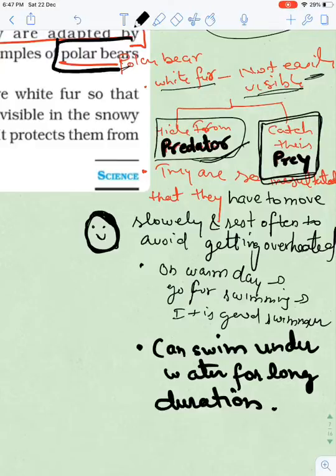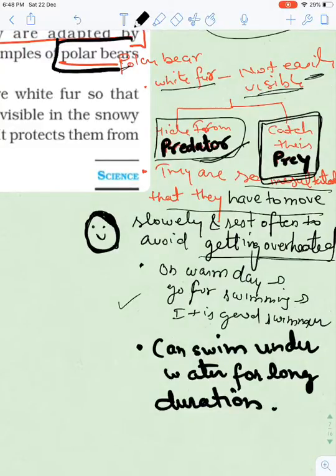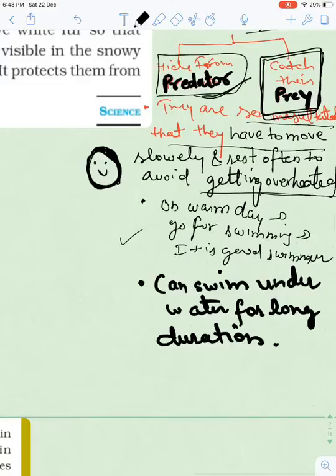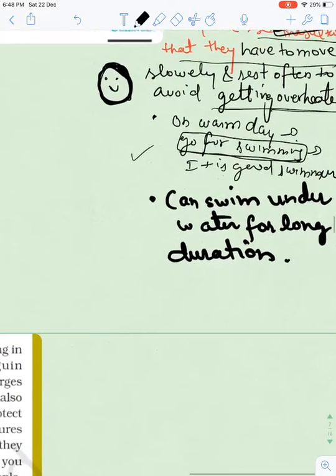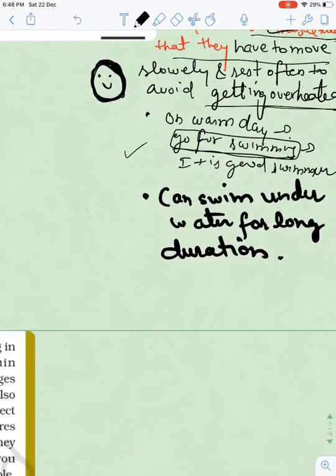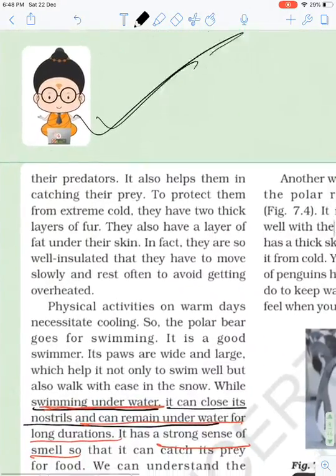They are insulated with a thick layer of fat, so they have to move very slowly, otherwise they will get overheated. Even in such cold, on warm days they go swimming, otherwise they get overheated. They are very good swimmers and can swim underwater also for long durations.